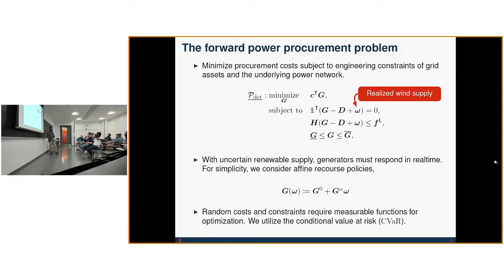To model that, we assume that the generators' recourse response is a linear function of the uncertain parameter omega. So we have some affine recourse policy. Now when we incorporate these into our problem, we have stochastic objective and stochastic constraints, so we need to apply some kind of measure in order to optimize over this problem.